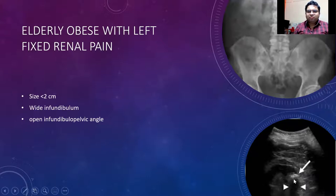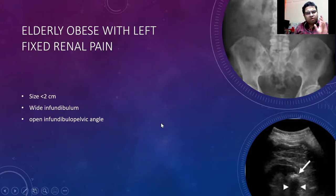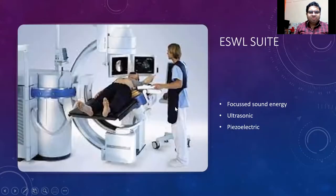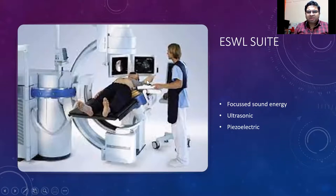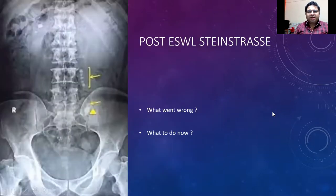We did an IVP and CT IVP showing three features: the stone is less than two centimeters, there is a wide infundibulum — the channel between the calyx and pelvis — and the angle is wide, meaning stone fragments can pass into the pelvis. If all these features are present, you can proceed with ESWL. This is done under C-arm and ultrasound guidance: focused sound energy — ultrasonic or piezoelectric — is used to break the stone. However, at the dead of night she came back to the emergency department with a 'Steinstrasse' — a necklace of stones stuck in the ureter.